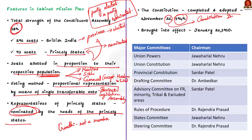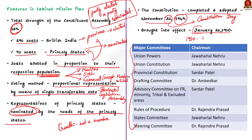The Constituent Assembly appointed a number of committees to deal with different tasks of constitution making. The Constitution was adopted on November 26, 1949, but brought into effect only on January 26, 1950. This date was chosen because it was on this day in 1930 that the Indian National Congress made Poorna Swaraj, or complete independence, as its goal. With this we have seen the historical background of the Indian Constitution and how it came into effect.